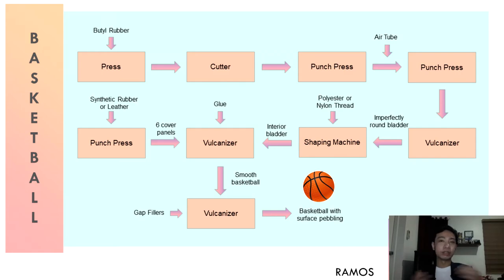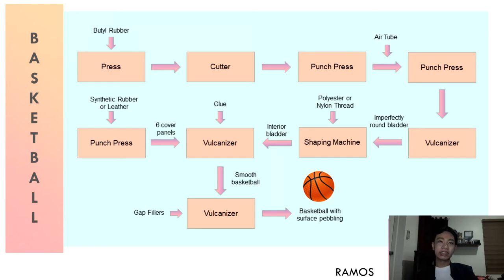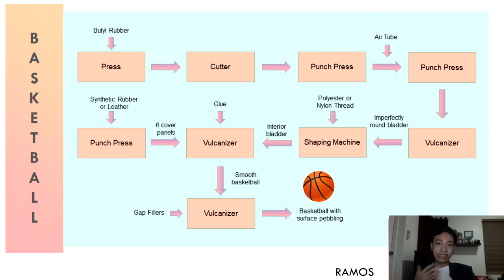We now have the completed interior bladder, but we still need to make the cover. Synthetic rubber or leather is sent into a punch press to create six cover panels per ball. The cover panels and interior bladder are sent into a vulcanizer, with the interior bladder coated with glue before being placed inside. After vulcanization, we have a basketball but with a smooth surface. The ball is carefully inspected for gaps between the panels, and if needed, gap fillers are used. The ball is sent to a specially molded vulcanizer to produce a pebble-like surface, and then stored for an additional 24 hours to test air retention.